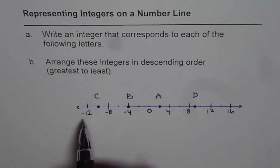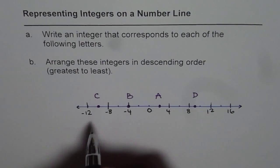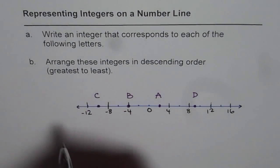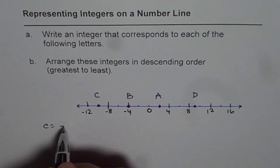C is between minus 8 and minus 12, right in between. It is minus 10. So let me write C equals to minus 10.